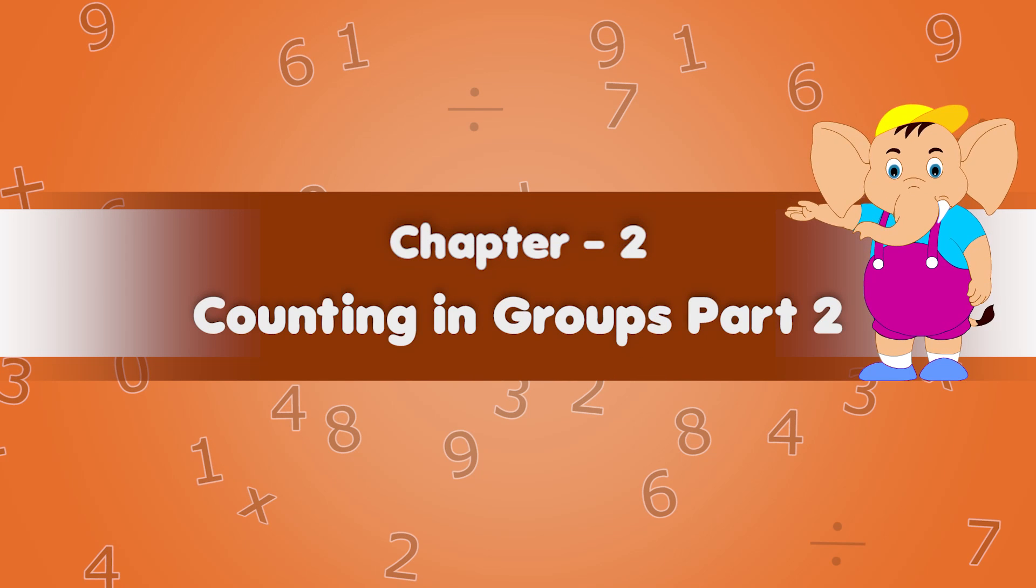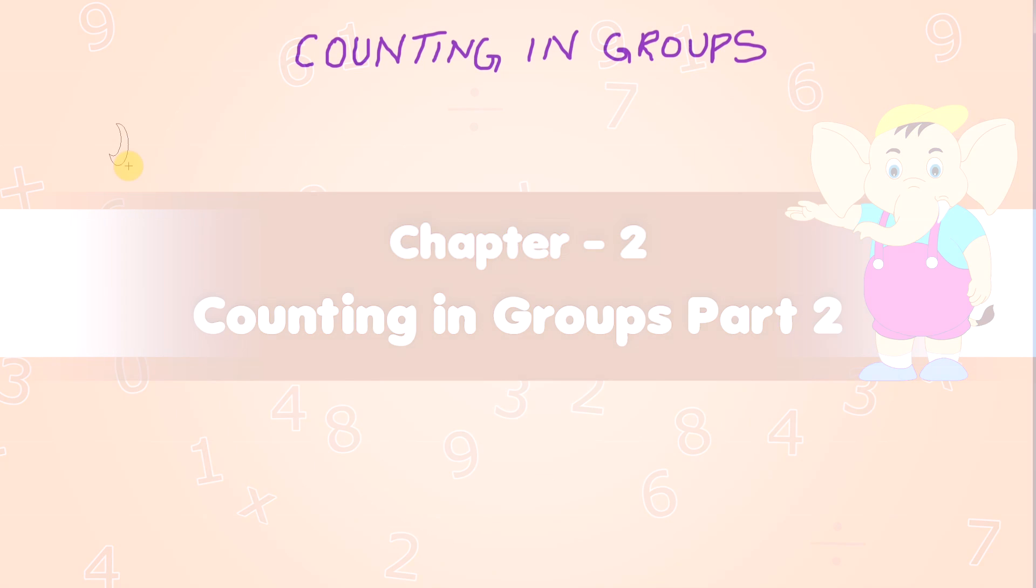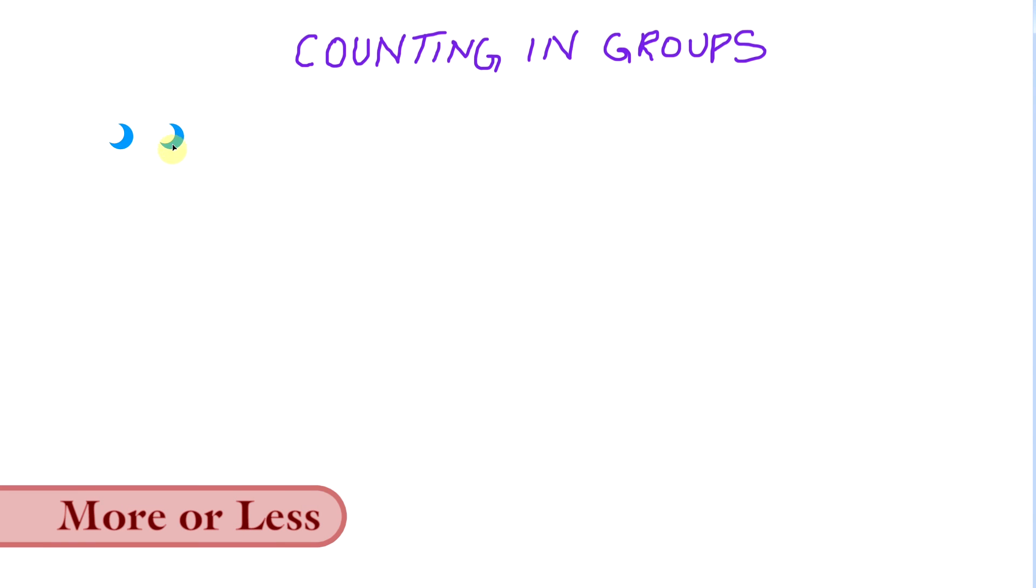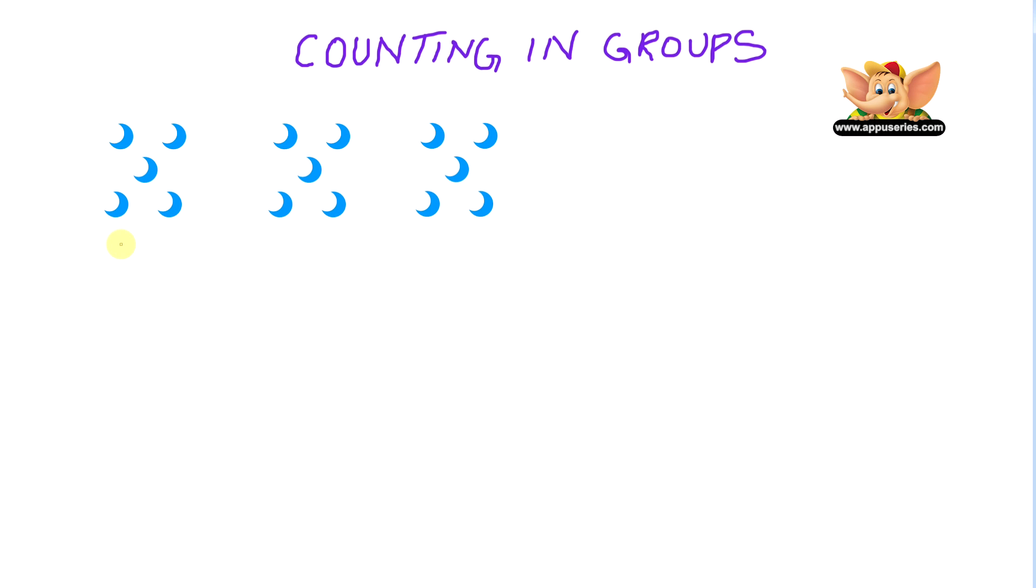Chapter 2: Counting in Groups. More or less. How many crescent moons are there? More than 18 or less than 18? Now we have five moons in a group - one, two, three, four, five. Simple. Now we have three such groups.